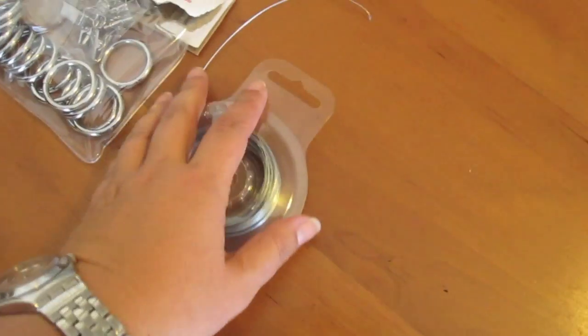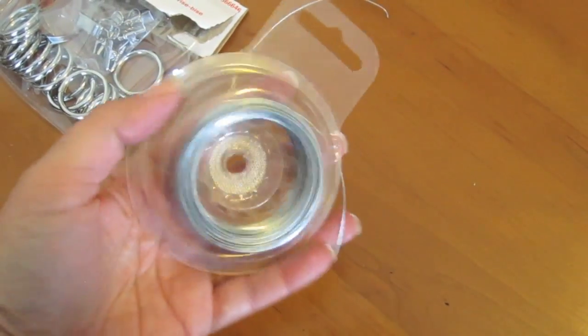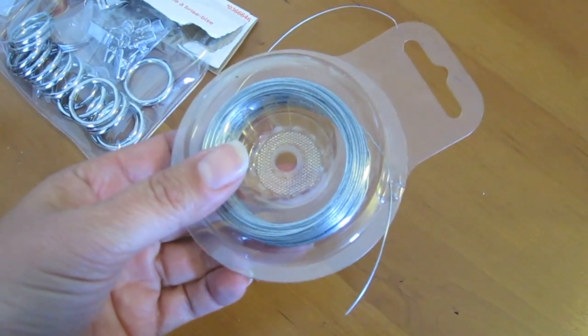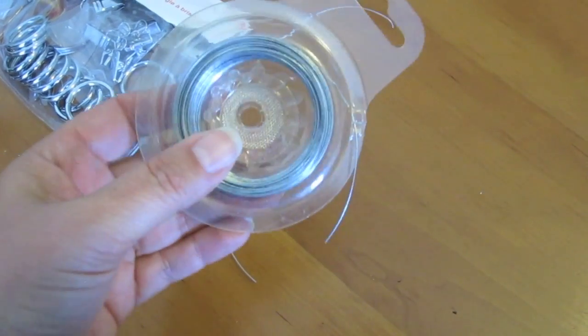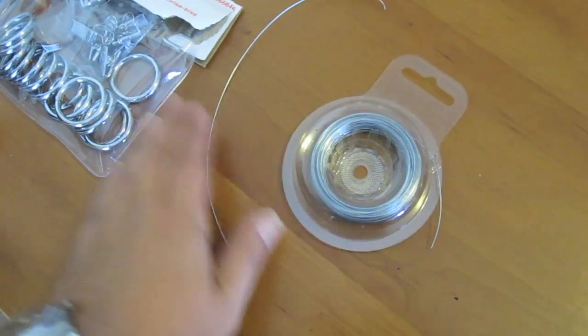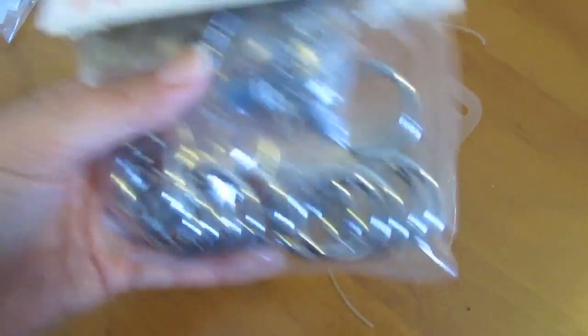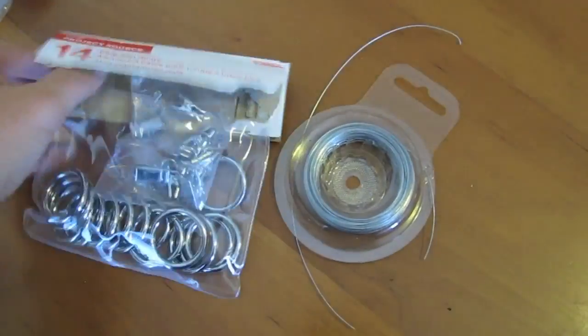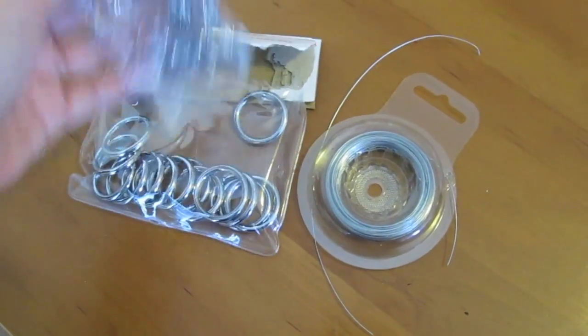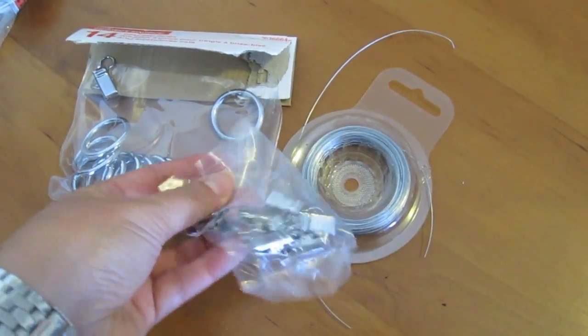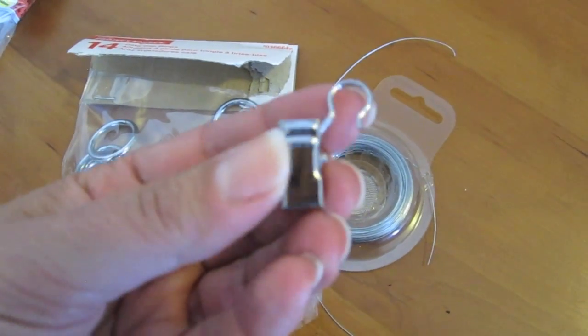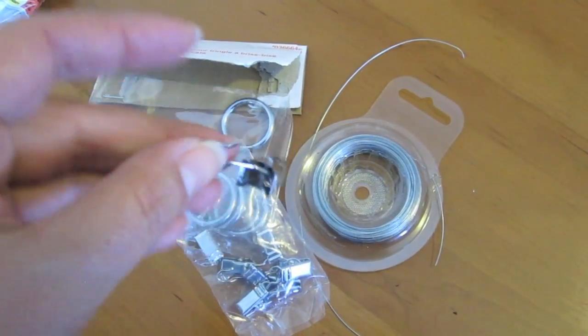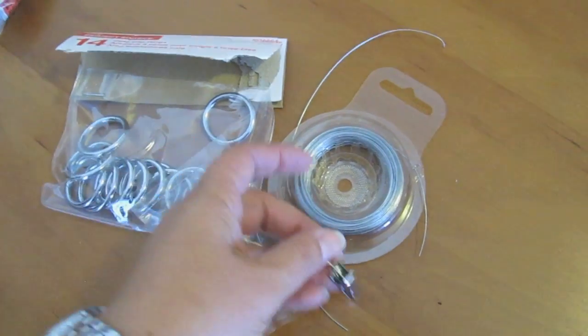For additional parts, you'll need some picture hanger wire from the Home Improvement Store where you buy picture hangers, and then you need these cafe clip rings that you get in the Home Improvement Store curtain areas. I actually got these ones at Home Depot, but they also sell them at IKEA and lots of different places.